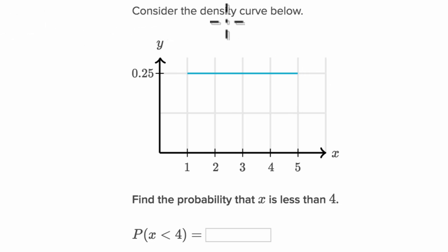Consider the density curve below. We have a density curve that describes the probability distribution for a continuous random variable. This random variable can take on values from one to five and has an equal probability of taking on any of these values from one to five.